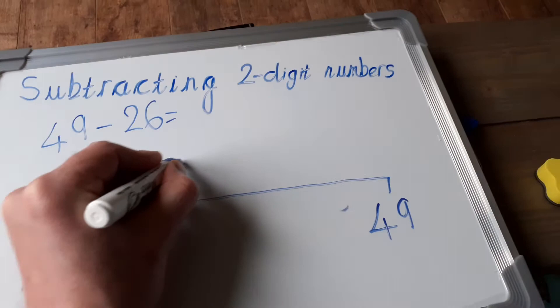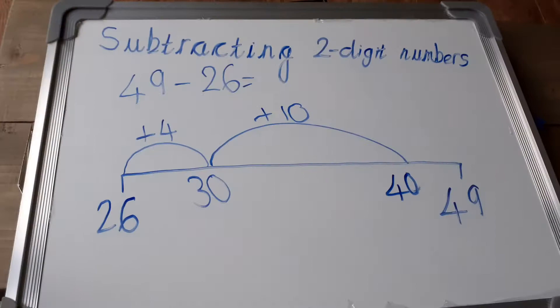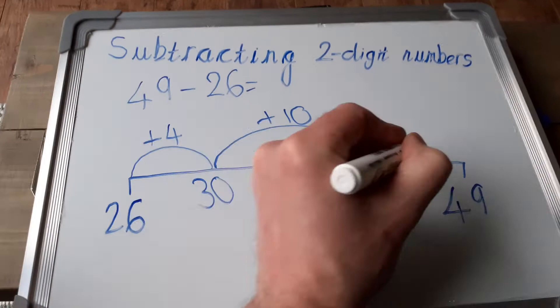Okay. And now the final jump, we need to get from 40 to 49. So we need to add another 9. So there we go. We'll jump from there to there, and we've added another 9.